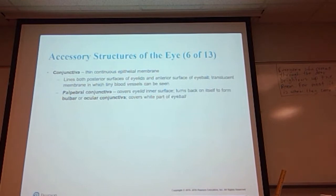The conjunctiva is the thin continuous epithelial membrane on the inside surface of the eyelids. It lines both the posterior surface of eyelids and the anterior surface of the eyeball. It's a translucent membrane with many tiny blood vessels. The palpebral conjunctiva covers the eyelid's inner surface. It turns back on itself to form the bulbar or ocular conjunctiva, which covers the white part of the eyeball. If you've ever had pink eye, the clinical name is conjunctivitis—the conjunctiva is what is infected during pink eye.